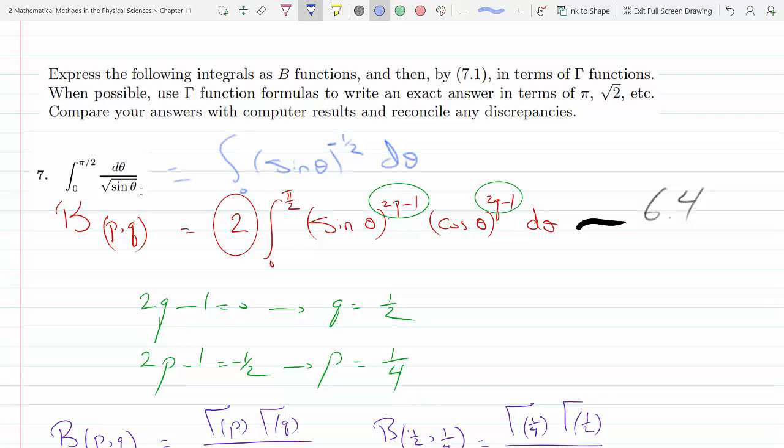Comparing to equation 6.4, we can see that the power of sine θ, which is 2p-1, has to equal minus half. We don't have a cosine in the expression, so that means the exponent of cosine would have to be 0 to give us a 1.